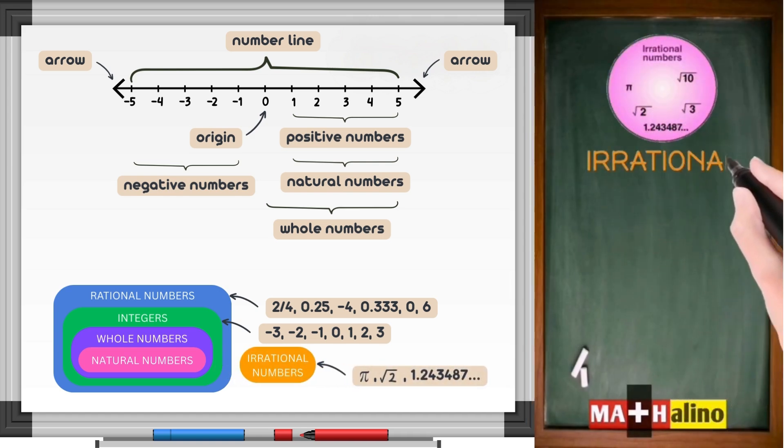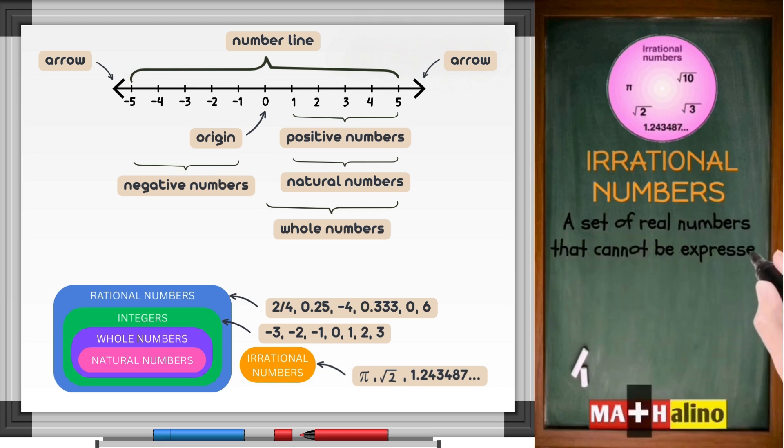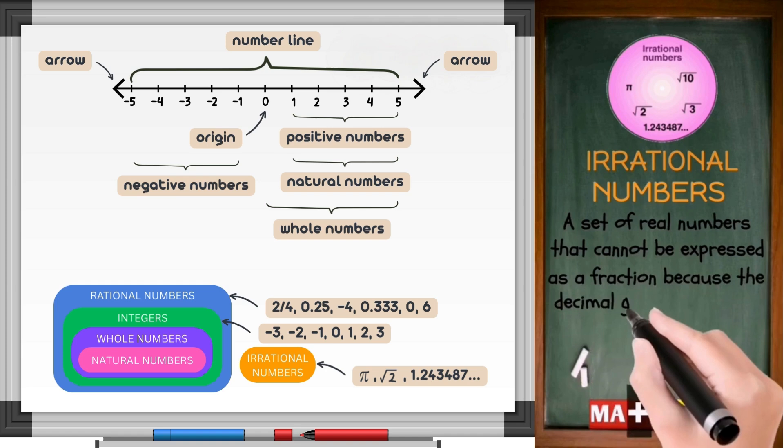Irrational numbers. A set of real numbers that cannot be expressed as a fraction because the decimal goes on without repeating.